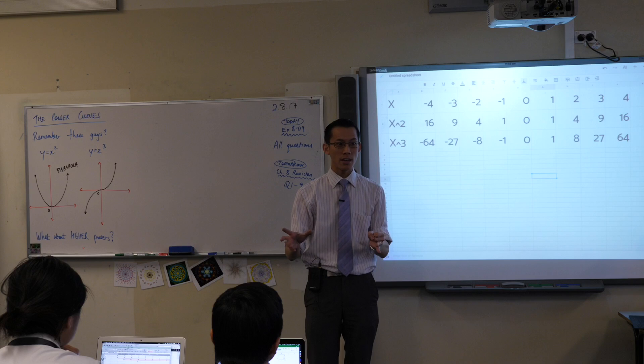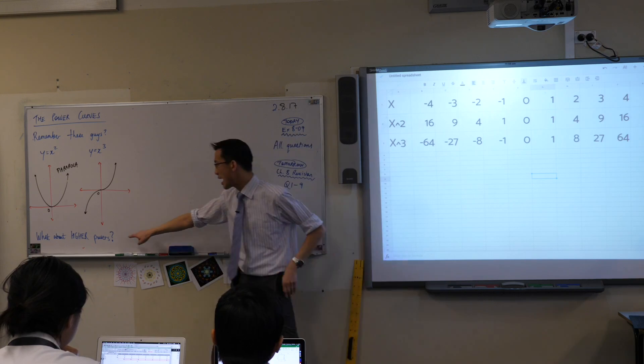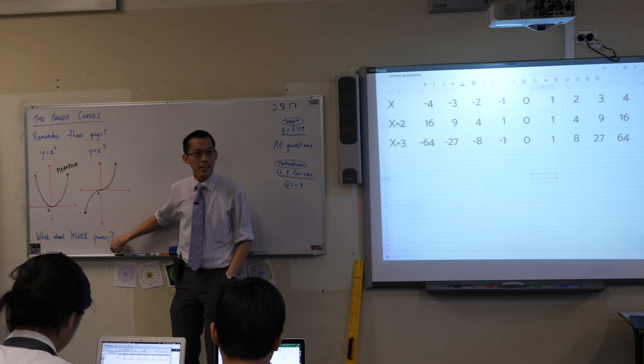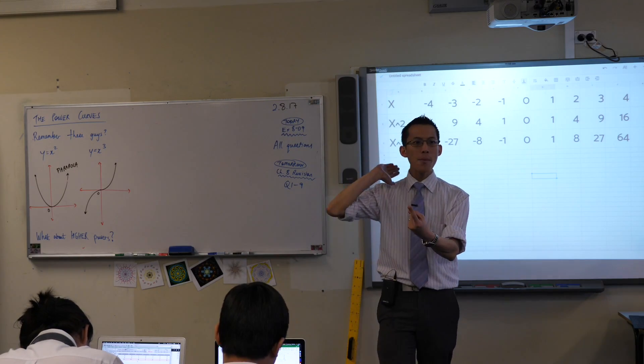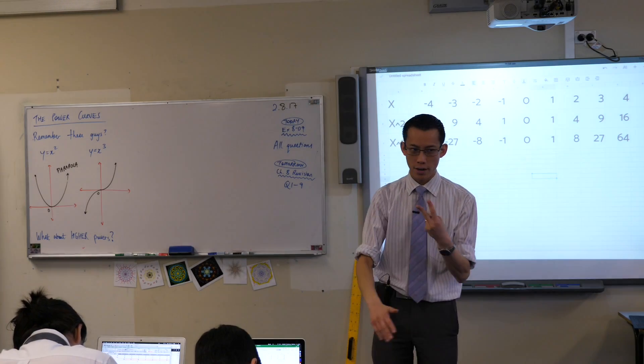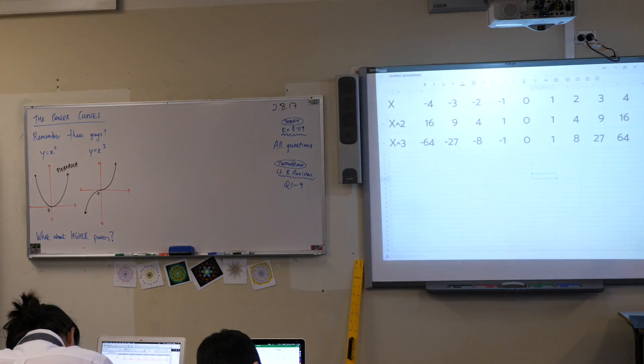I'm going to ask you to take a moment to actually go to your book. See how here it says, what about higher powers? Underneath there, I want you to make some predictions. Make two or three or four, however many you can think of. What will be the same? What will be different? I'll give you about a minute to write some things down.